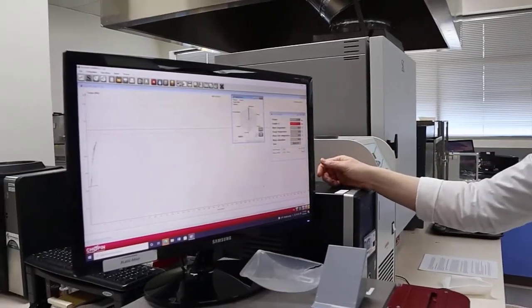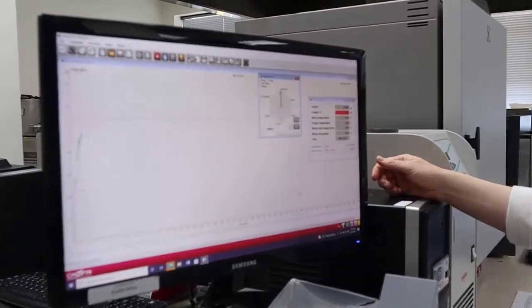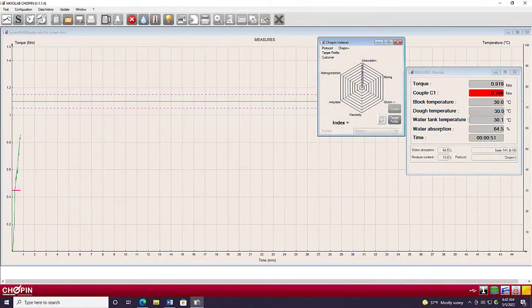And so while the test is running, especially during the first phase where we're holding temperature constant and we're just evaluating the torque profile, the mixing parameters, this C1 torque value will show as red while you're outside of the range. Once you reach the desired torque range between these two pairs of dotted lines, this box will turn green, showing you that you've hit your target torque value.